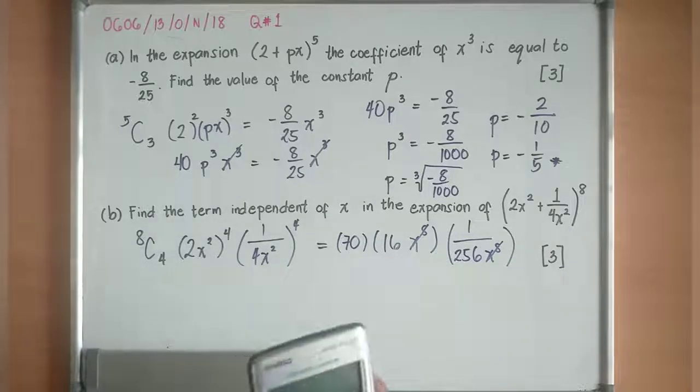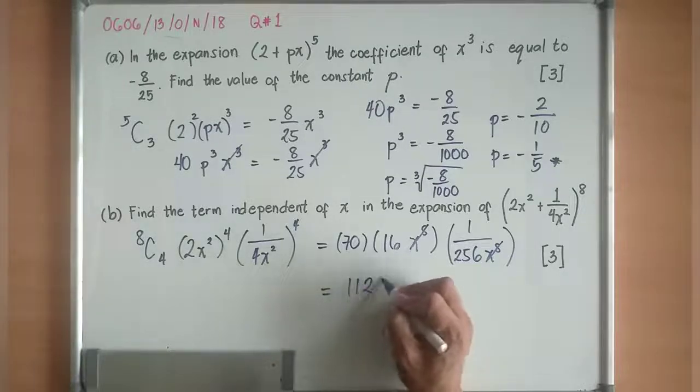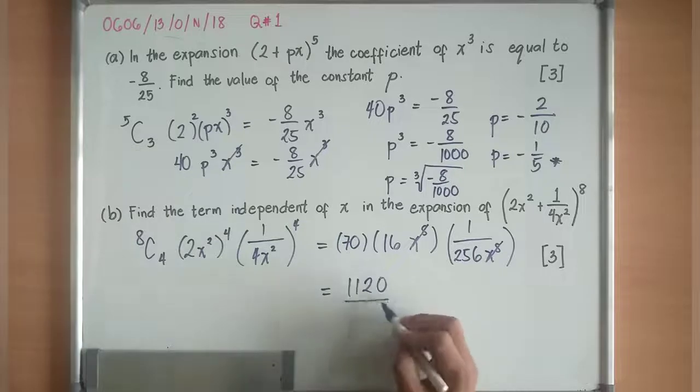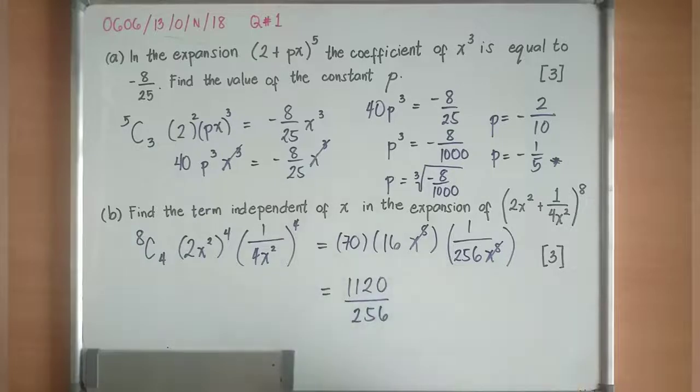So 70 times 16, 70 times 16 is equivalent to 1120 over 256 will be below.